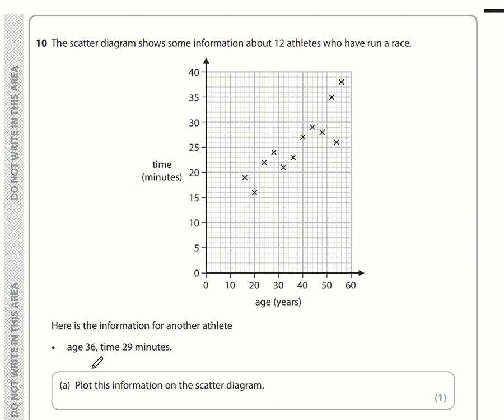Question number 10. For the first question, we need to add in this extra athlete. He's 36 years old. Age is across the bottom, so we locate 36, which is 2 to the left of 40. His time is 29 minutes, so 1 below 30. So 36 across and 29 up, that is that point there.